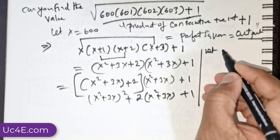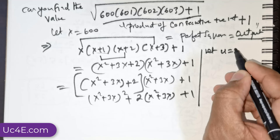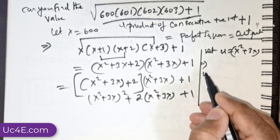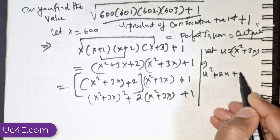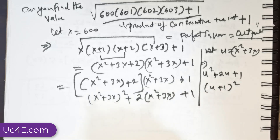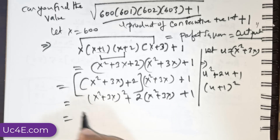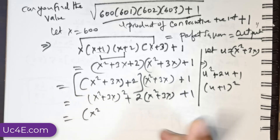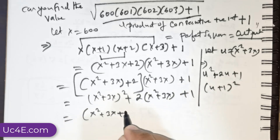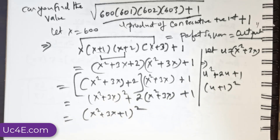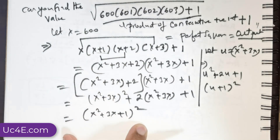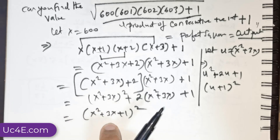Now let u = x² + 3x. What we have is u² + 2u + 1, which is nothing but (u + 1)². Substituting back, this equals (x² + 3x + 1)². So the entire expression under the square root simplifies to (x² + 3x + 1)².